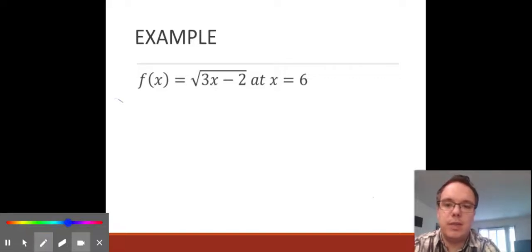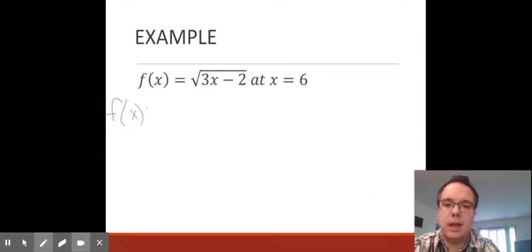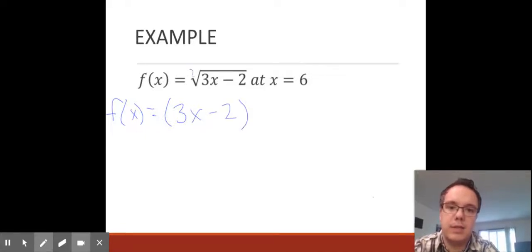First thing I'm going to do is rewrite my function as a power. So I'm going to have (3x - 2) in parentheses. Remember, there's a hidden 1 over 2 here, so this is the 1/2 power.